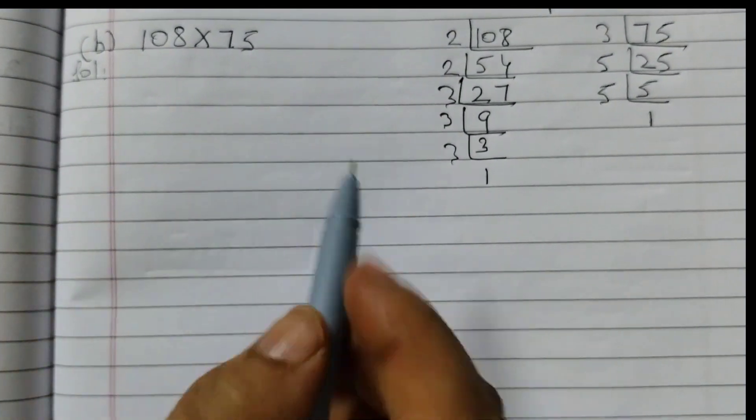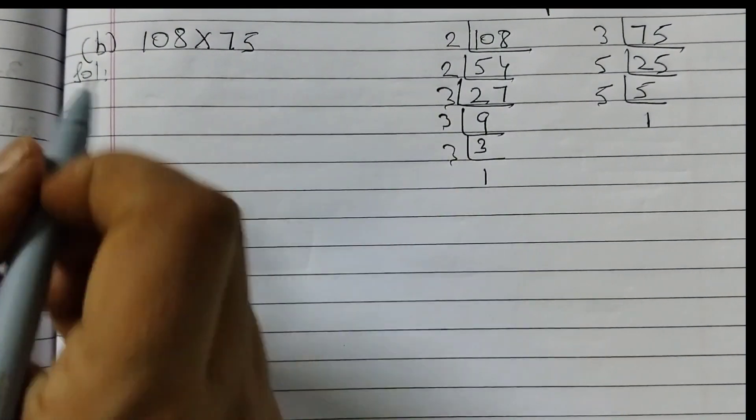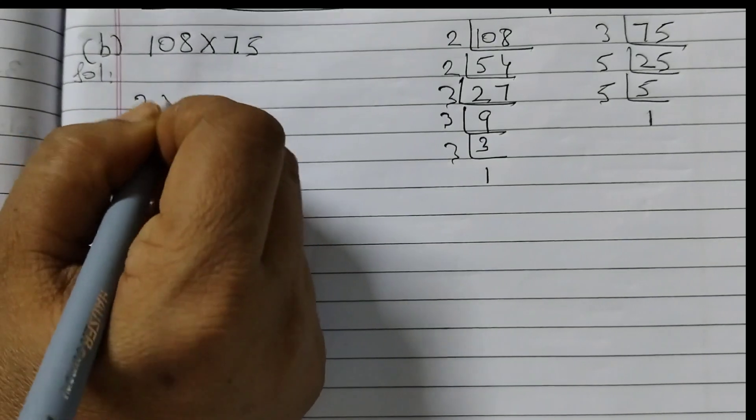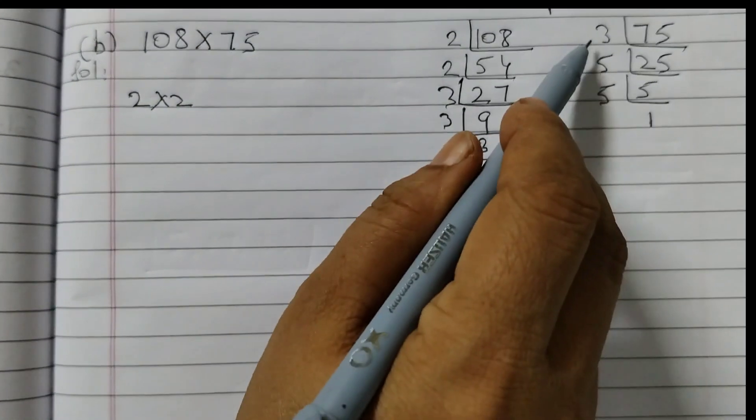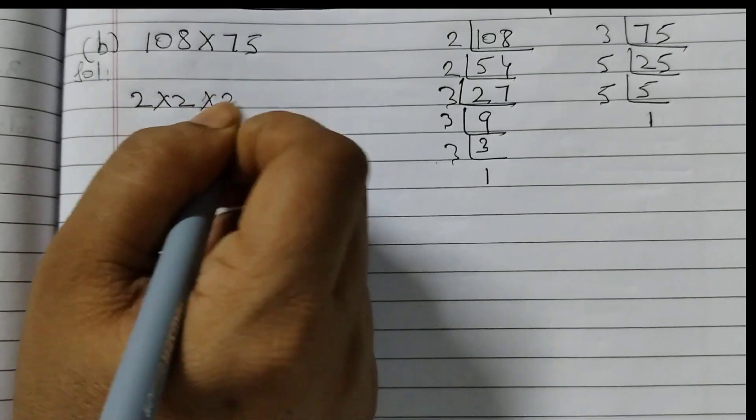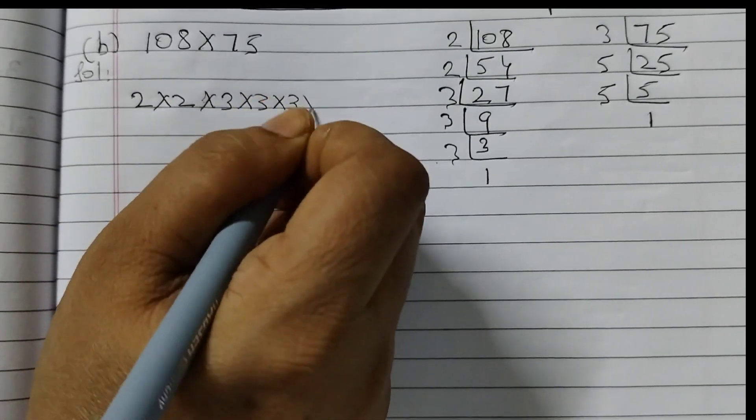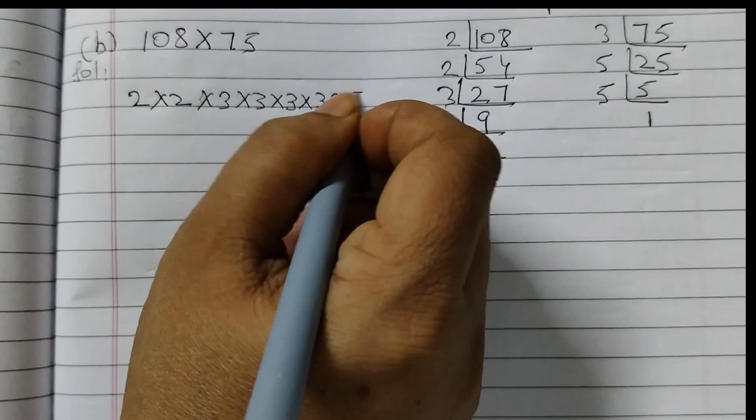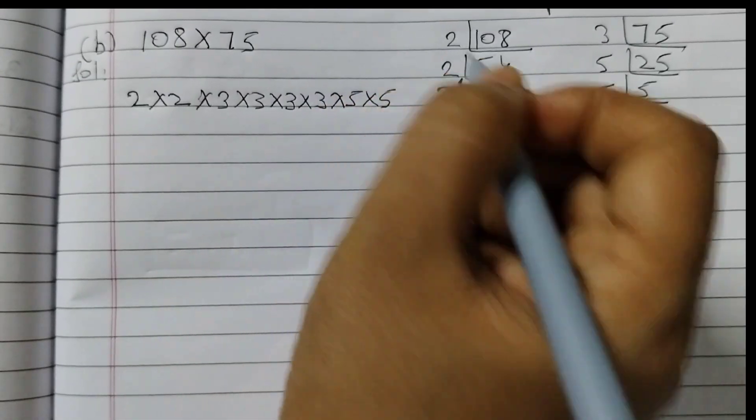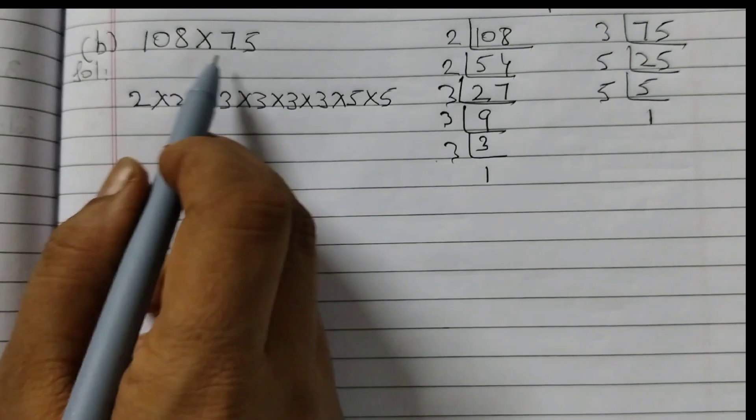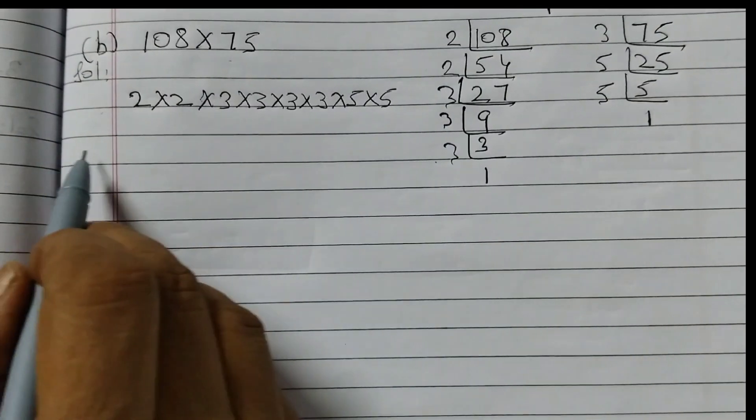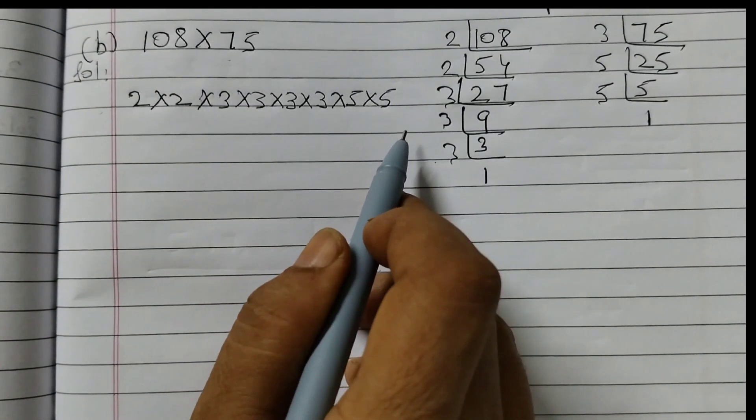So now we will write the answer here. 1, 2, we have 2 times 2, so 2 into 2. 1, 2, 3, 4, and we have 2 fives. So this is the answer for the second one. Separately you find out the prime factors and then arrange it in increasing order.